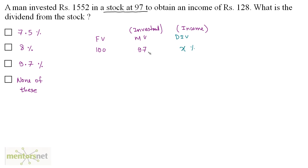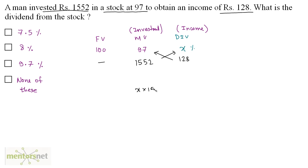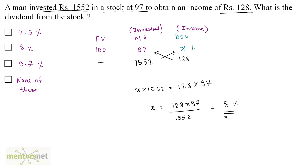If the investment is Rs. 97, the income is x. We have been given the total income as Rs. 128 and the total amount invested as Rs. 1552. Cross multiplying: x × 1552 = 128 × 97. Therefore, x = 128 × 97 / 1552, which gives 8%. So the dividend is 8%.